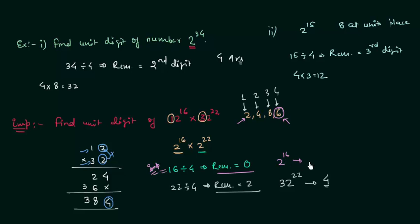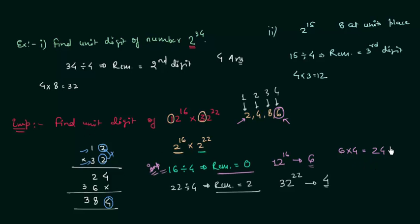So 12 raised to power 16 has 6 at the unit place, and 32 raised to power 22 has 4 at the unit place. We multiply these unit digits: 6 multiplied by 4 gives 24, and the digit at the unit place is 4. So the final answer is 4 at the unit place for 12 raised to power 16 multiplied by 32 raised to power 22.